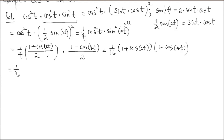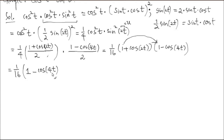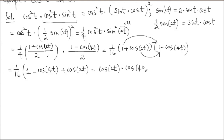So here's 1/16. I'm going to multiply it out. 1 times 1 gives 1. Then 1 times negative cosine 4T gives negative cosine 4T. Then cosine 2T times 1 gives positive cosine 2T — that's a pure wave. Now these two things — cosine 2T and cosine 4T — are multiplied and give negative cosine 2T times cosine 4T.